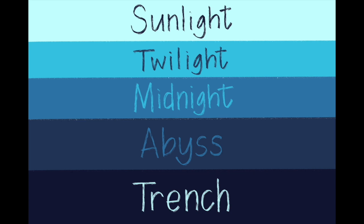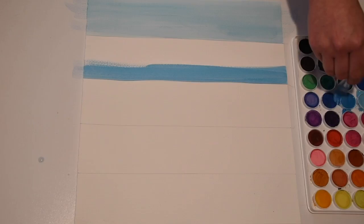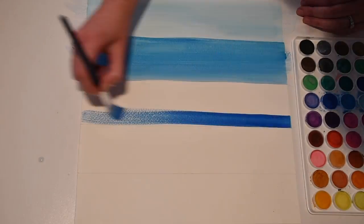Let's make our own ocean layers. For this activity, you'll need paper, and you can choose between paint, crayons, or colored pencils — any of those. Whatever you decide to choose, make sure that you have blue in various shades. Divide your paper into five equal parts. Start at the top with the lightest shade of blue, and as you work your way down, make each shade of blue darker.